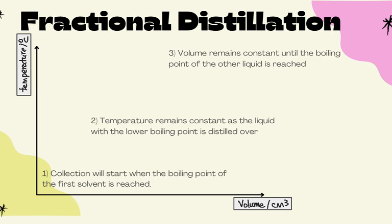In the temperature versus volume graph, no volume is collected until the boiling point of the first liquid is reached at 78°C. Temperature remains constant while the lower boiling point liquid is collected. Then temperature increases to the boiling point of water at 100°C. No volume is collected between the two boiling points, and a second collection begins when the second boiling point is reached.